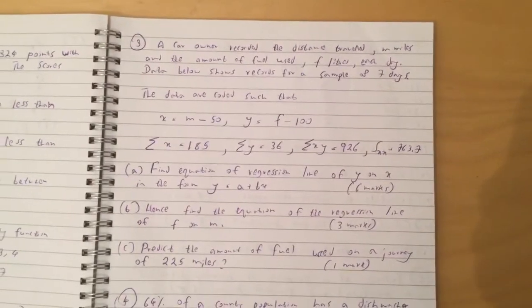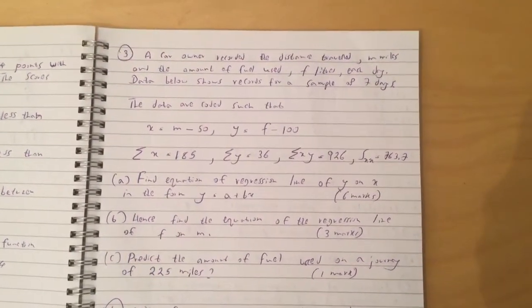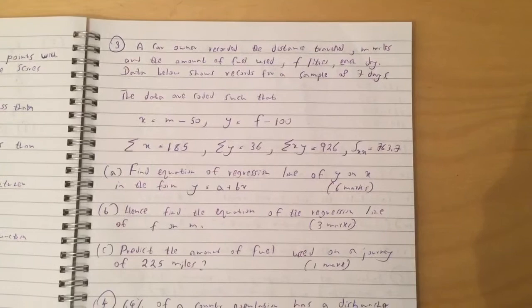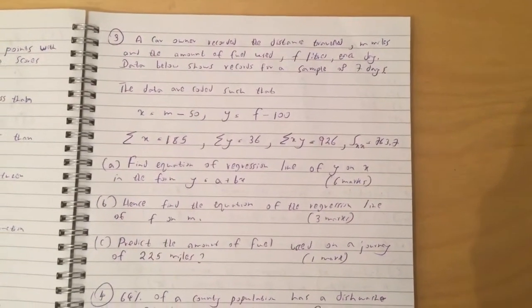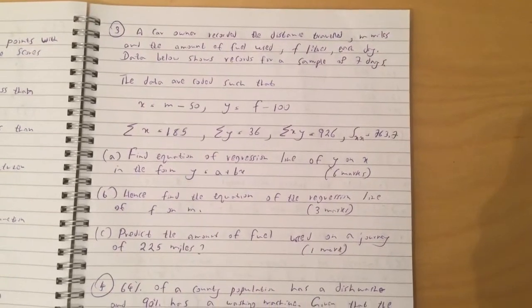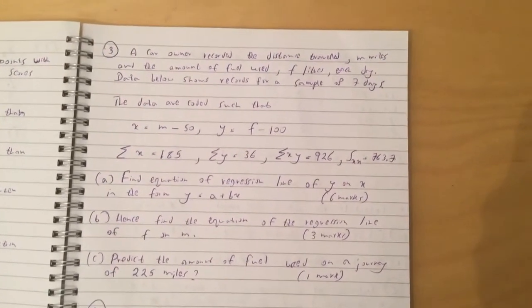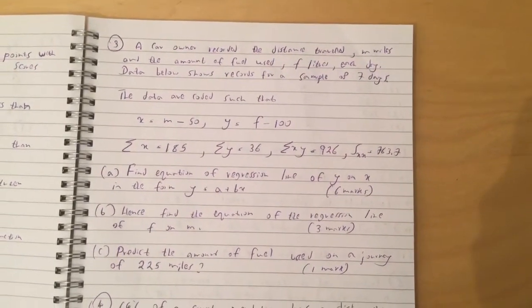Question 3. A car owner recorded the distance travelled m miles and the amount of field used f litres each day. Data below shows records for a sample of 7 days. The data are coded such that x equals m minus 50 and y equals f minus 100.